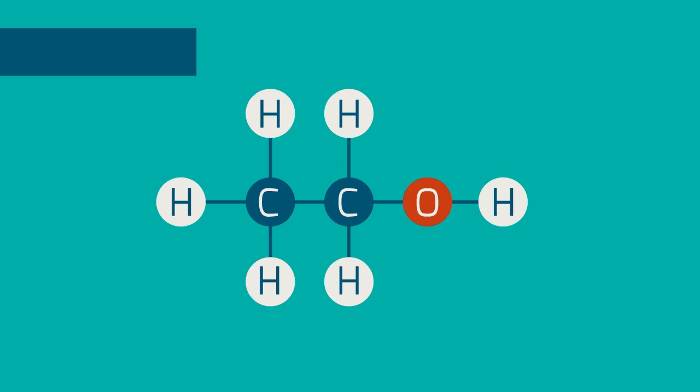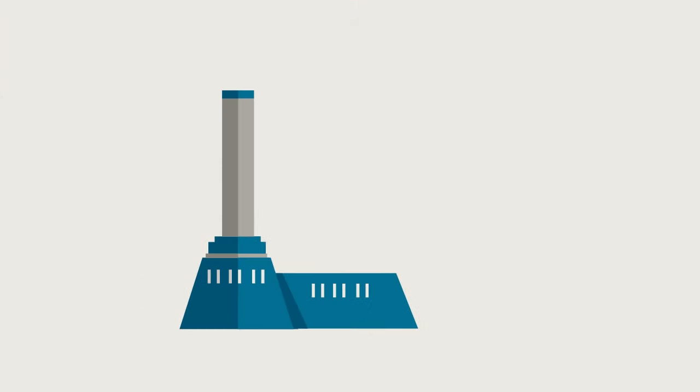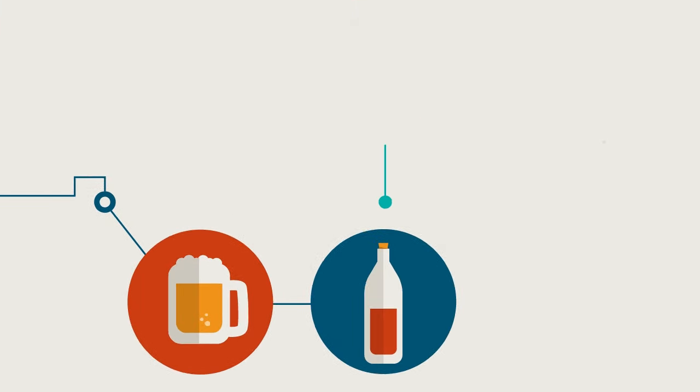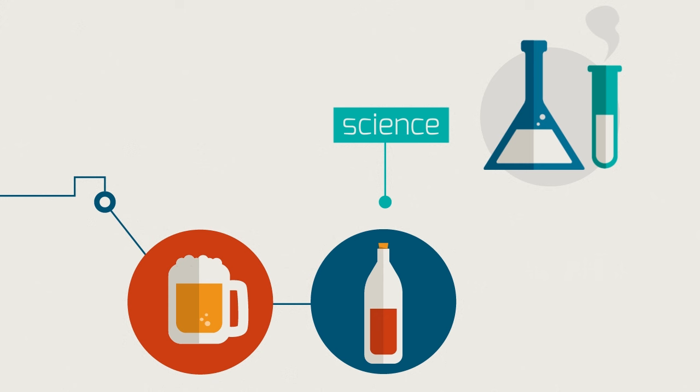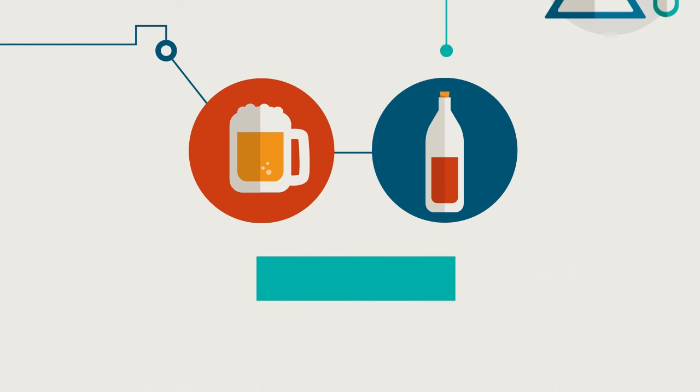We also use the 2-carbon alcohol, ethanol, as an ingredient in alcoholic drinks. The alcoholic drinks industry is huge and making beer or wine requires science. The process for making alcoholic drinks is called fermentation.